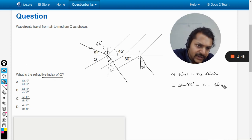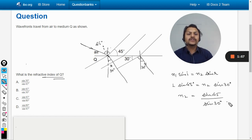So from here we reach this conclusion that n2 will be sin 45 divided by sin 30 degrees. So we need not substitute the values further, like sin 45 is 1 by root 2, sin 30 is half.